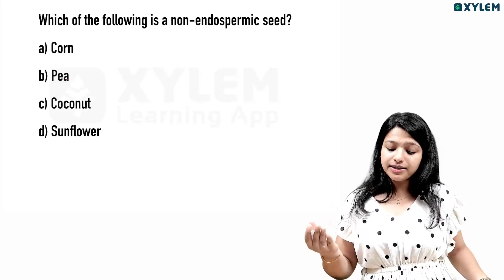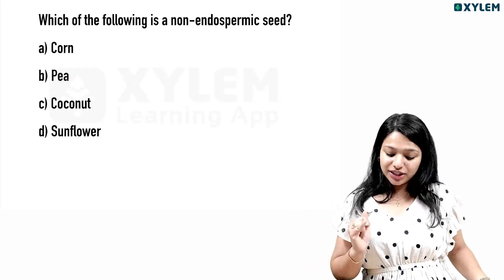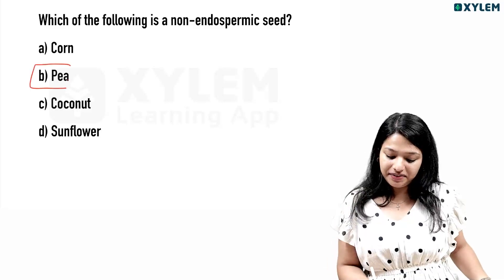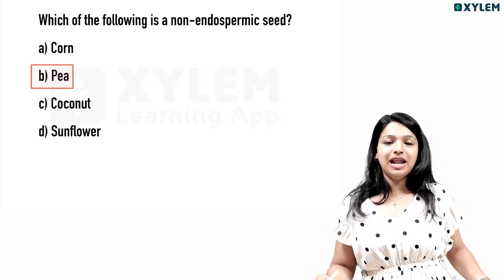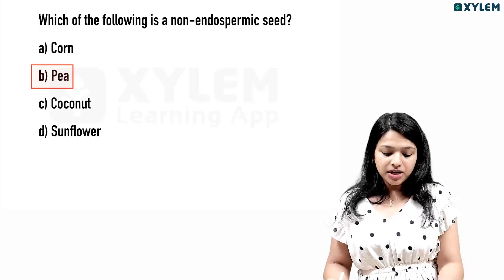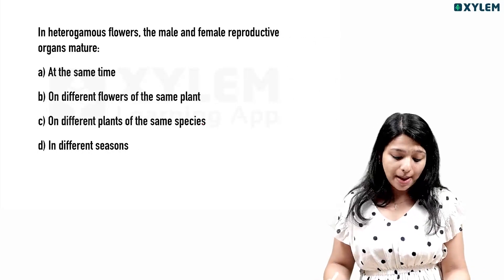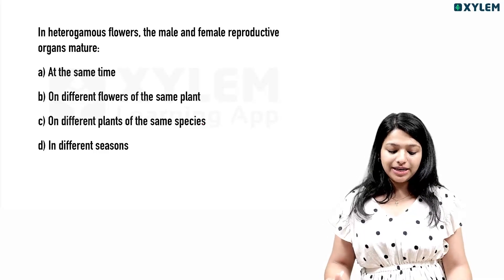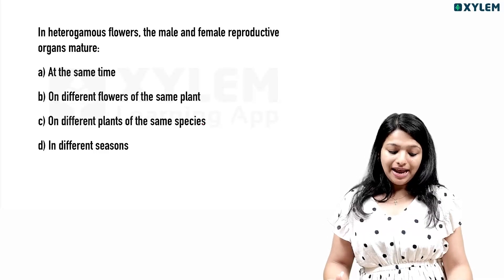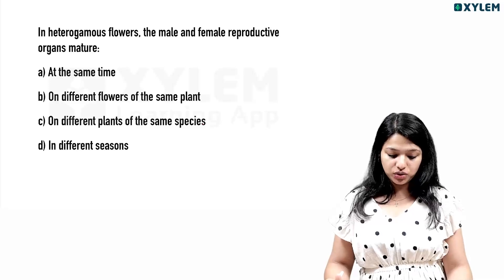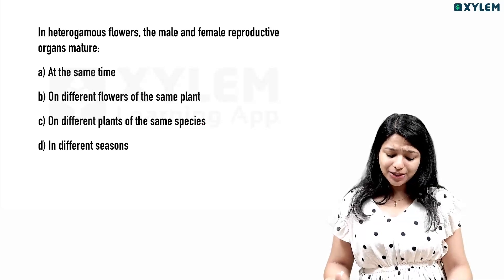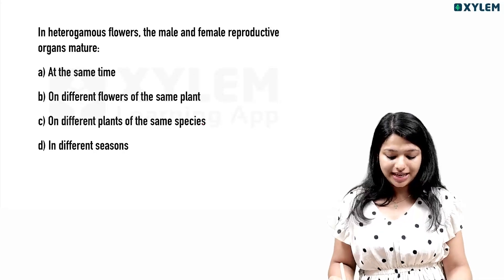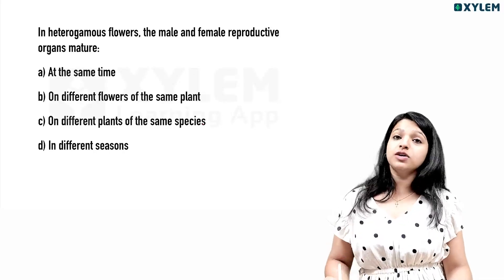Which of the following is a non-endospermic seed? Moving to the next question: in a heterogamous flower, male and female reproductive organs mature. What is heterogamous? — at the same time, on different flowers of the same plant, on different plants of the same species, or in different seasons.